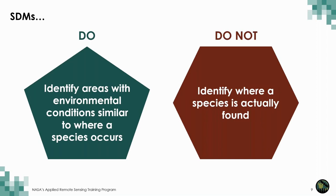Here is a really important distinction about SDMs. They identify areas with environmental conditions similar to where species occur, which is based on numerical relationships. The output is the suitable habitat piece. They do not provide information on where species actually occur, and this can only be done through ground-based data collection. There are always uncertainties associated with models, and no model is perfect. Please keep this in mind when using SDMs.